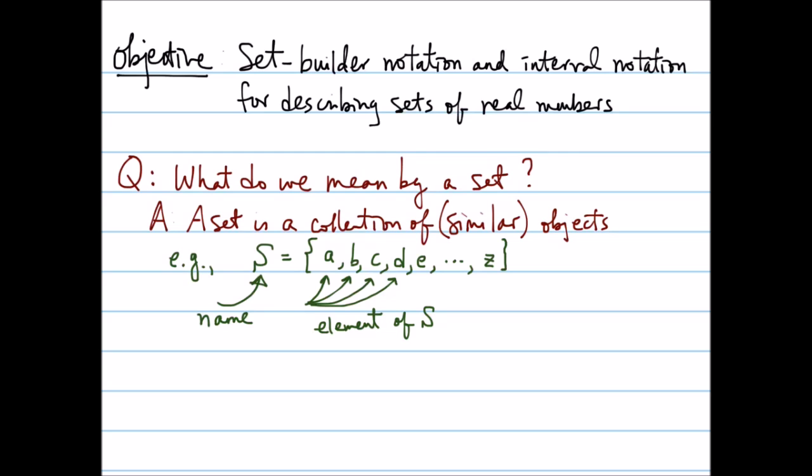If something is found in a set, then we write, for example, the alphabet C is an element of the set S. So we use this symbol here to denote an element of. This means that C can be found in a set S.